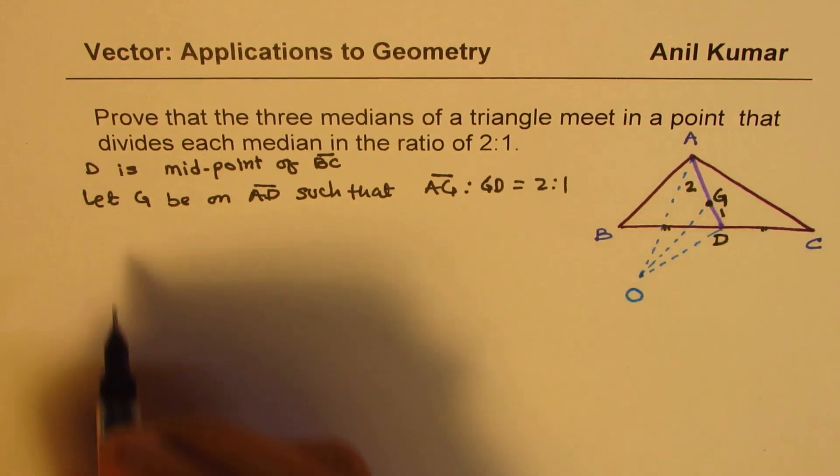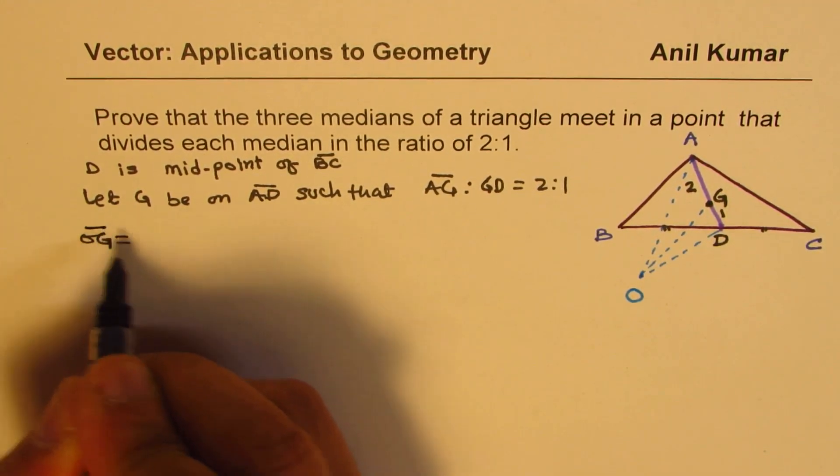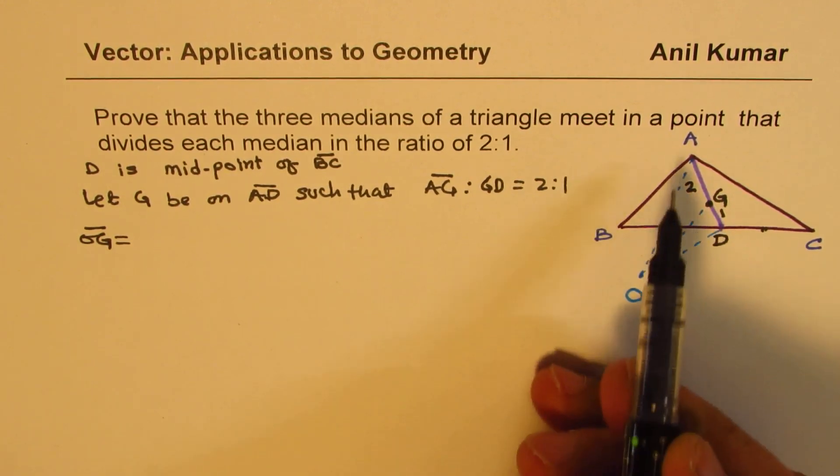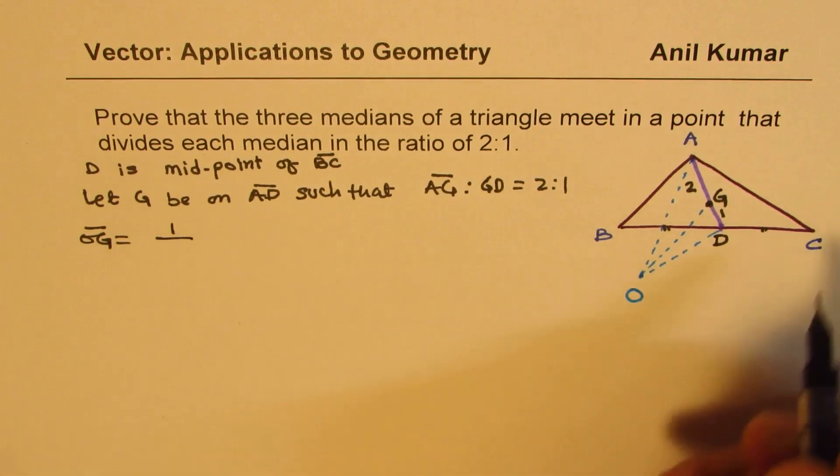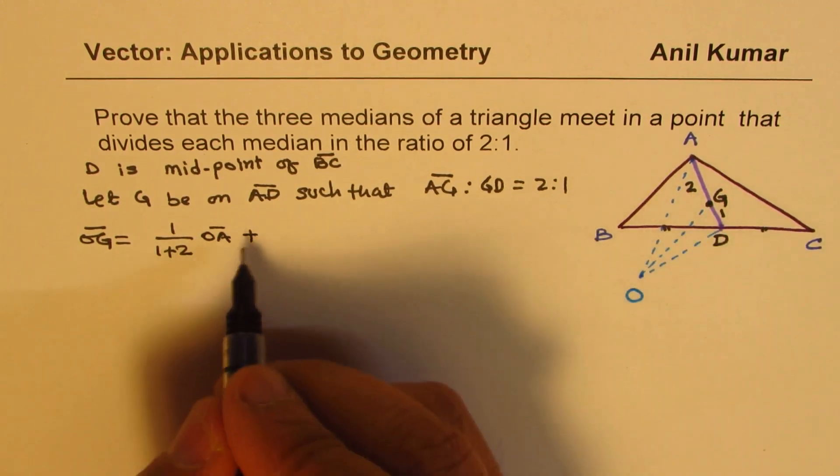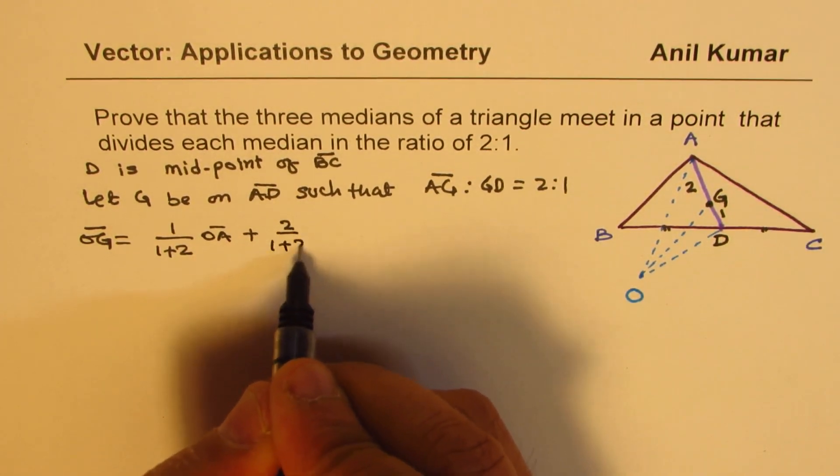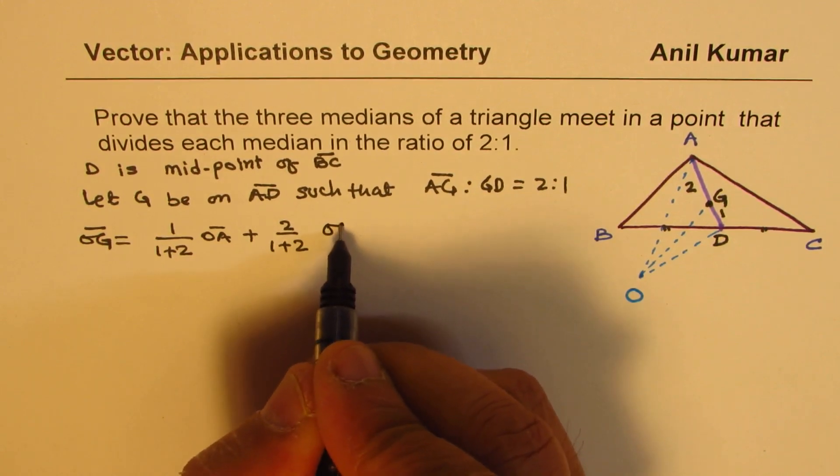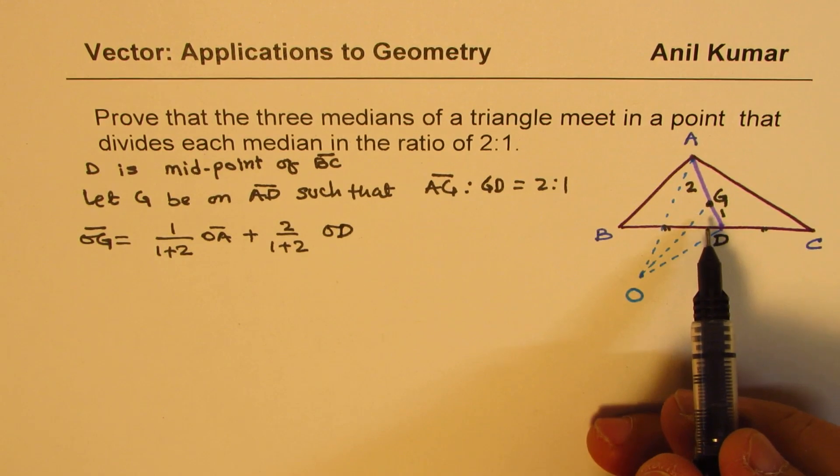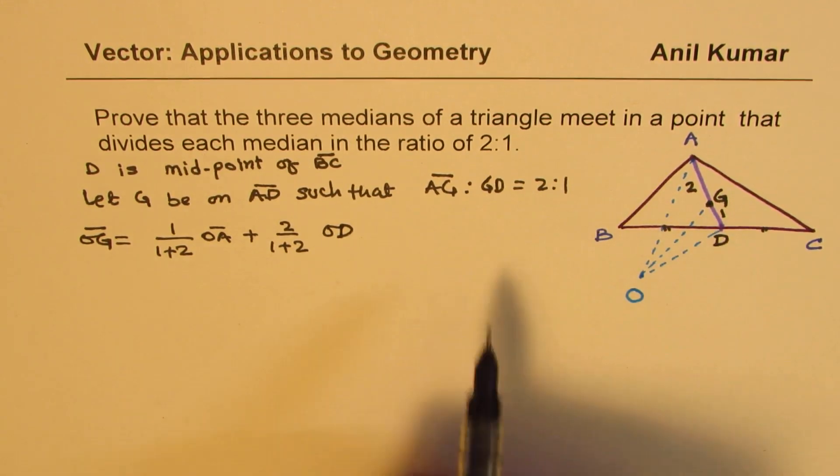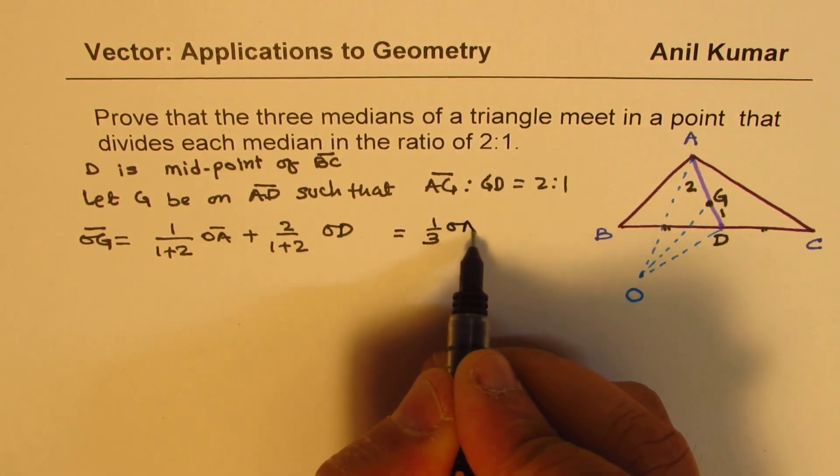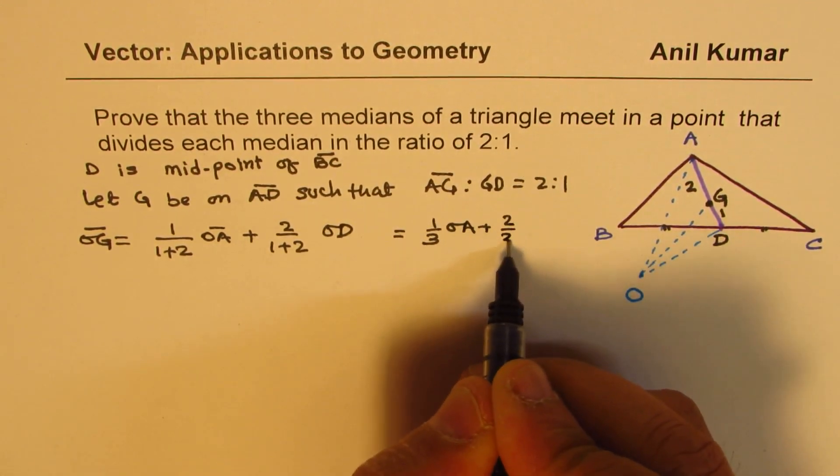OG could be written in terms of OA and OD using the section formula, or the division of line segment formula which I just mentioned. We can now write OG equals, since the division is 2:1, 1/(1+2) times OA plus 2/(1+2) times OD. That becomes OG using the formula which I shared with you. You can rewrite this as 1/3 of OA plus 2/3 of OD.